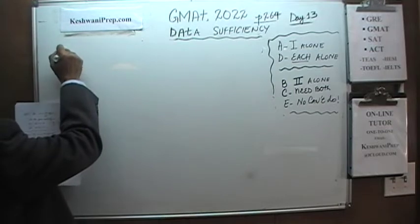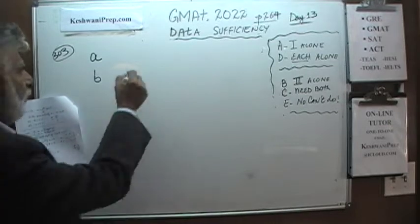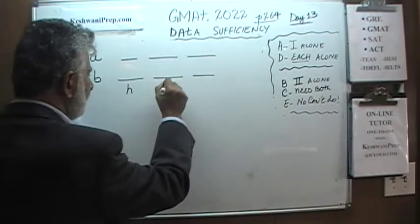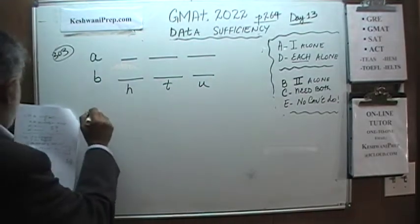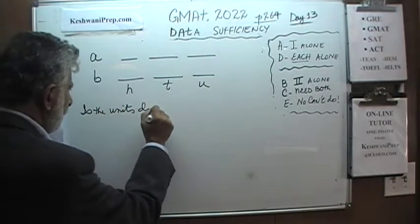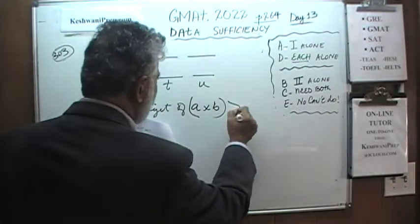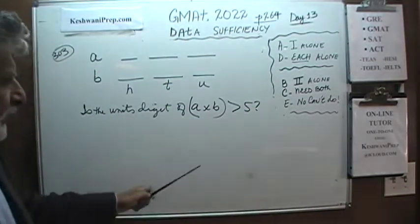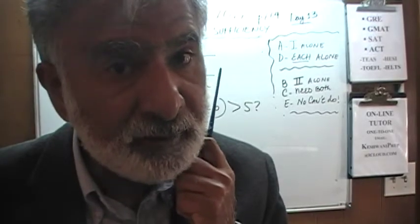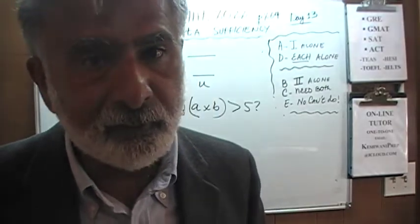In problem 303, we have two three-digit integers A and B — each with hundreds, tens, and units digits. The question is: is the units digit of A times B greater than 5? When we multiply two three-digit numbers, does the product end in something more than 5? The first statement tells us the units digit of A is 4. Simply knowing A ends in a 4 does not enable us to figure out what the product ends in.